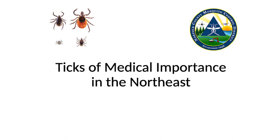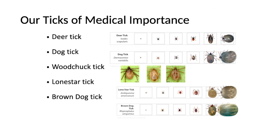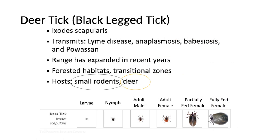Now we'll briefly go over some ticks — a few different ticks you should be aware of and the diseases they carry. Our ticks of medical importance in our area are: the deer tick or black-legged tick, the big one that everybody probably knows about because it carries Lyme disease as well as a few others. The dog tick is pretty common — you've probably seen a lot of those. The woodchuck tick is very uncommon, but it does vector a disease we're concerned about. The lone star tick is a newer one established on Cape Cod, so just be on the lookout for that. And the brown dog tick is very uncommon in our area.